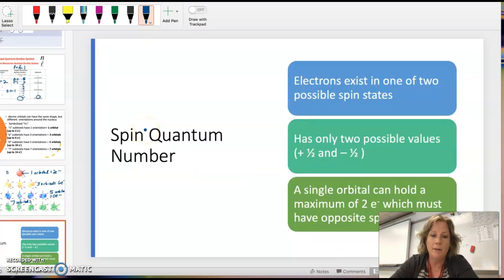The last quantum number is called the, sometimes we call it the magnetic spin, or the spin quantum number. This is just saying that electrons can only be together in an orbital, which can hold up to two, only if one is spinning clockwise and one is going counterclockwise. The spin quantum number is either positive one-half or negative one-half.